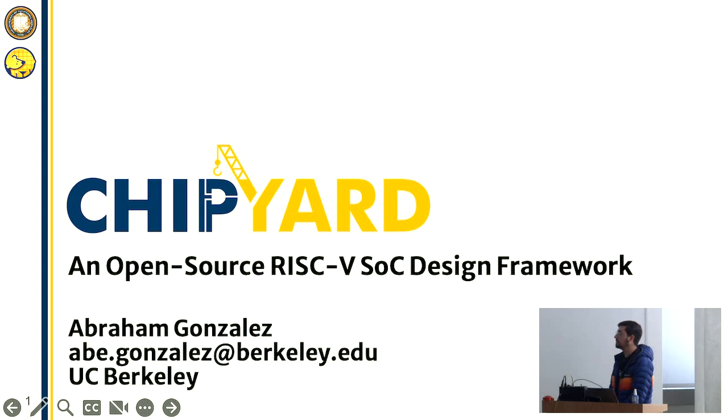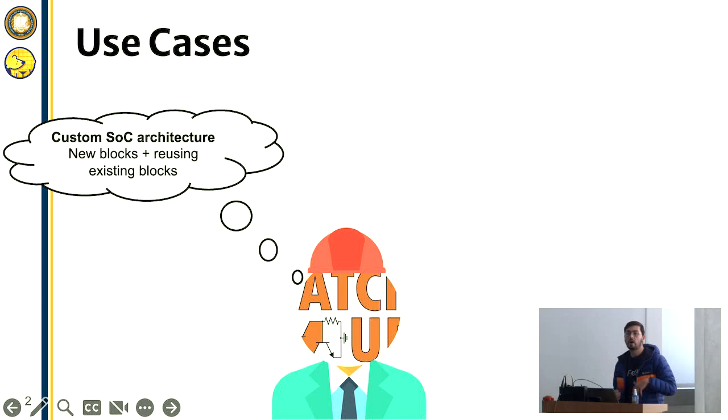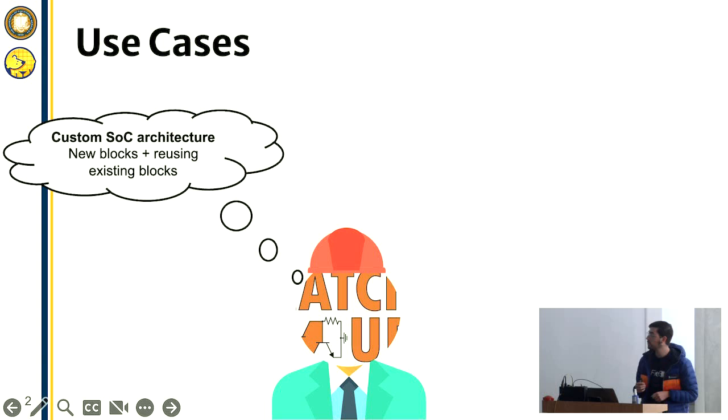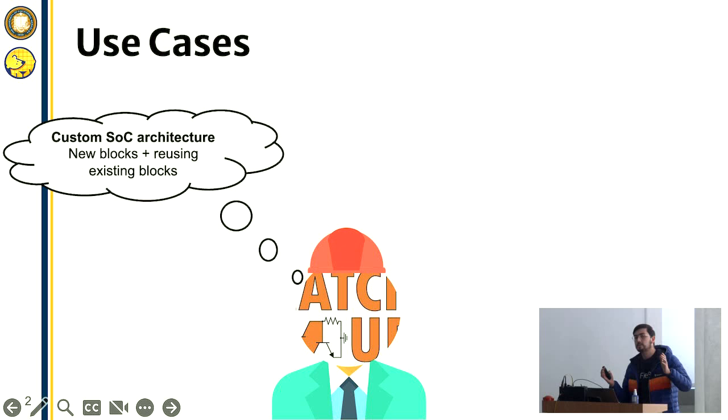Let's break this down and build some use cases for why you might want to use a tool like this. You have your custom SOC architecture with your particular new IP blocks, either written in Chisel, System Verilog, whatever it may be, and you want to reuse existing blocks. You're maybe building your accelerator or your own unique memory, resistive RAM, whatever the case is, but you don't want to implement the entire world. You want to have cores available to you.